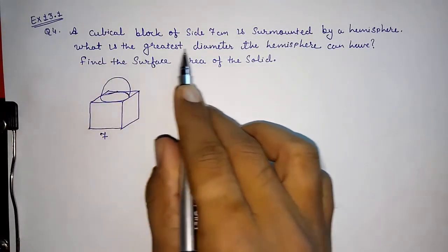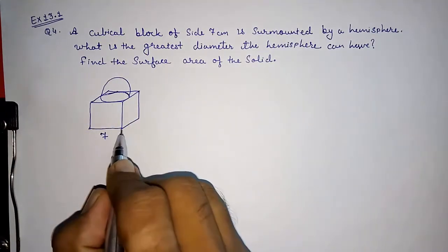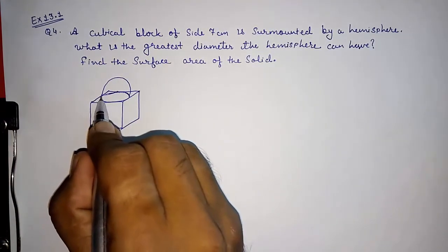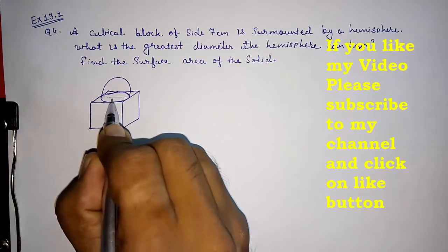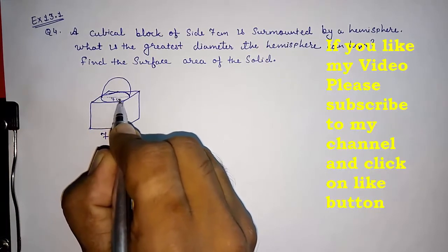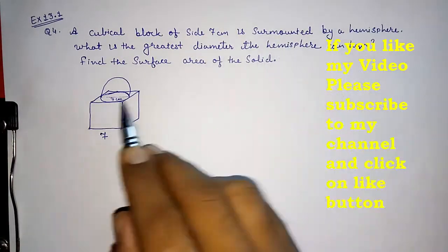What is the greatest diameter the hemisphere can have? We know the side is 7, so from here to here the greatest diameter possible will be also 7 centimeters. The greatest diameter the hemisphere can have is 7.